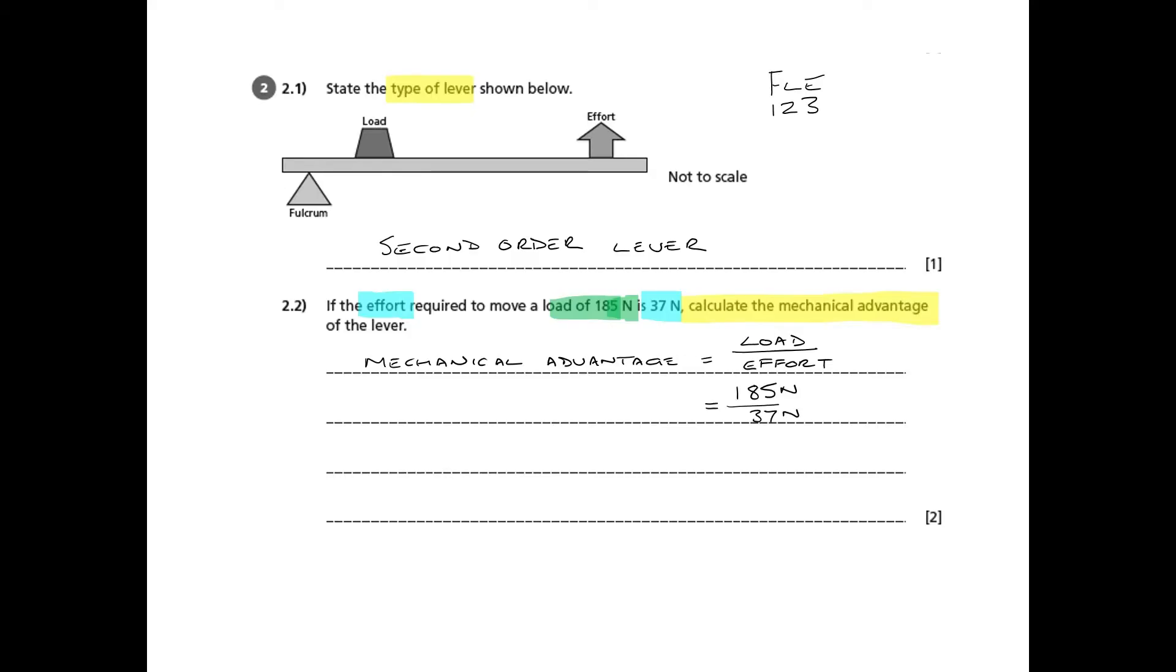The second mark is to do the calculation itself, transferring the 185 newtons over the 37 newtons or divided by the 37 newtons. And this is a reminder that you all need a calculator in the exam. And when you plug that in, you get five. Notice that there are no units with this, the two newtons effectively cancel out. Mechanical advantage doesn't have any units.